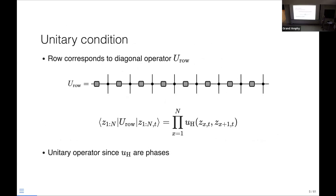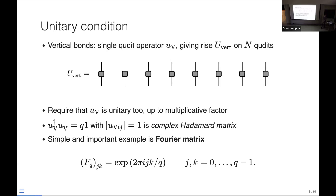If we look at a row in the partition function, that corresponds to a diagonal operator, where the matrix elements down the diagonal are phases given by the function u_h. That gives a diagonal unitary operator. For the vertical bonds, we require those to also be unitaries — each one of those vertical bonds is a single-site unitary operator on a q-dit. Since these u_v are unitary and they're also just phases, that makes them complex Hadamard matrices. A simple example of a complex Hadamard matrix is just a Fourier matrix, which computes the discrete Fourier transform in q dimensions.